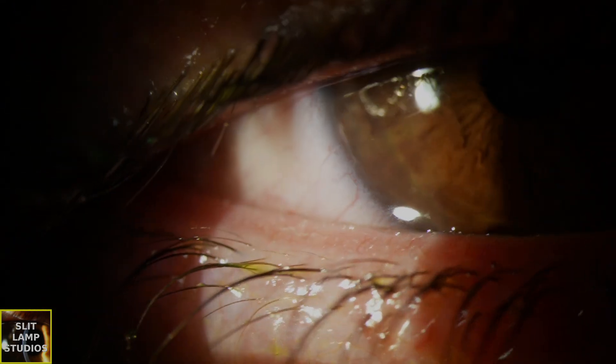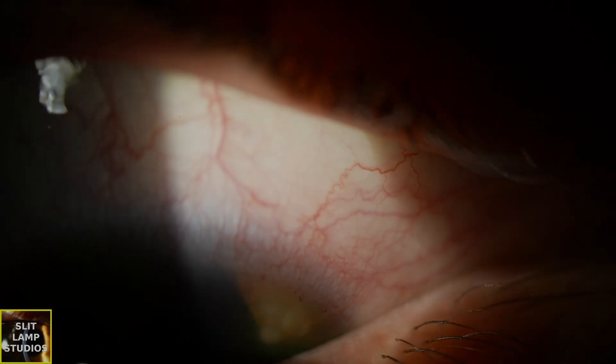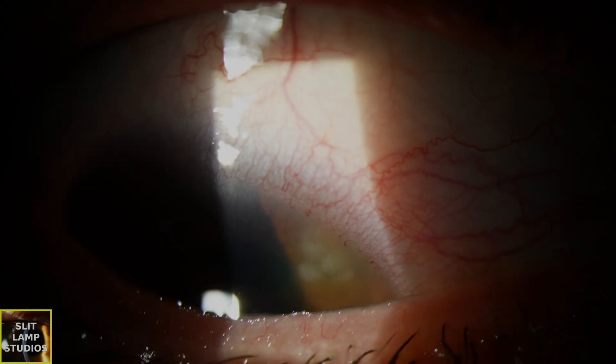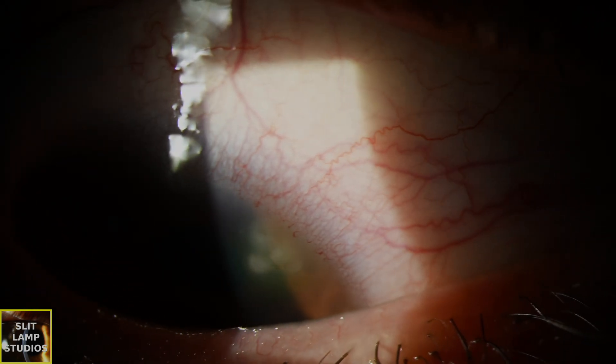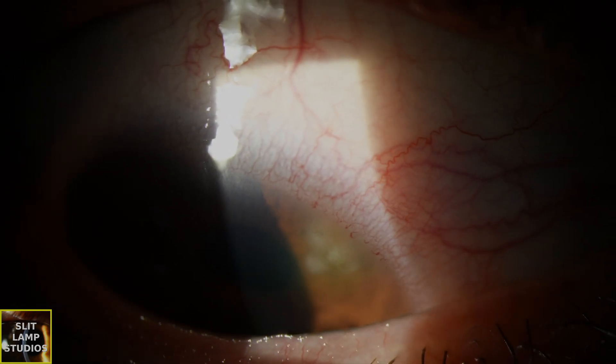Patients may have redness, irritation, tearing, and foreign body sensation. You'll see a crescent-shaped peripheral corneal infiltrate one or two millimeters from the limbus separated by a clear zone, and it may be associated with overlying epithelial staining. There's no significant ulceration, and no significant anterior chamber reaction unless there's a secondary infection.